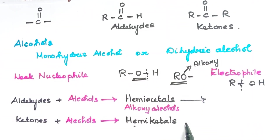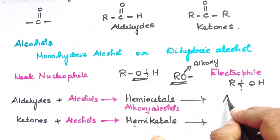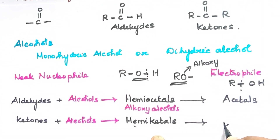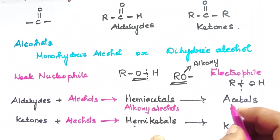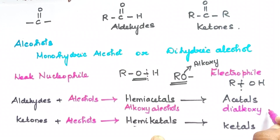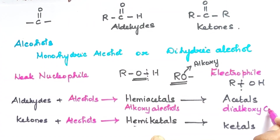When hemiacetals and hemiketals react further with alcohols, the final products — acetals and ketals — are formed. These are di-alkoxy compounds, meaning they contain two alkoxy (RO-) groups.